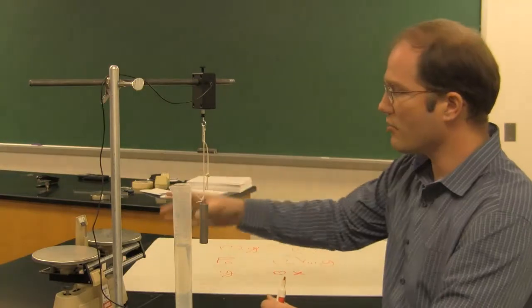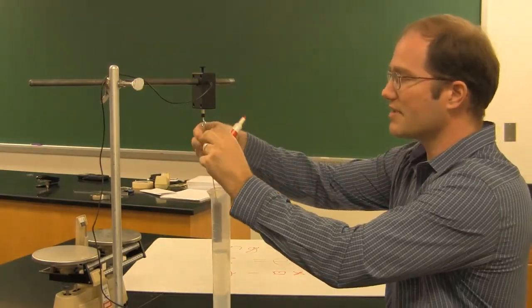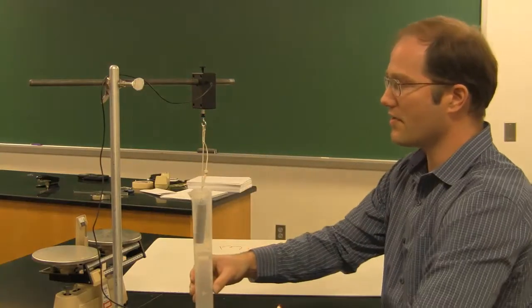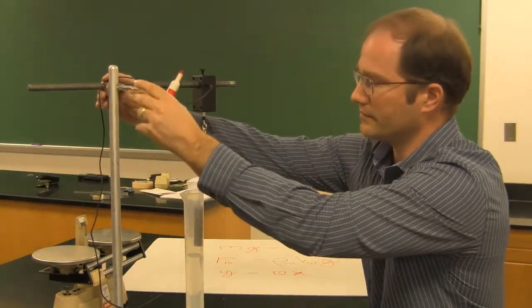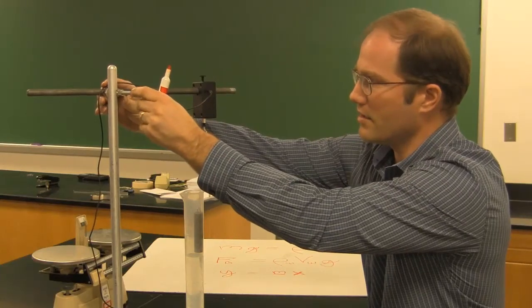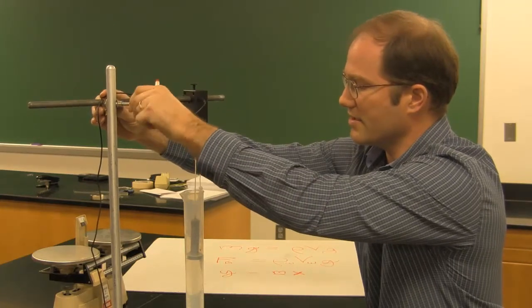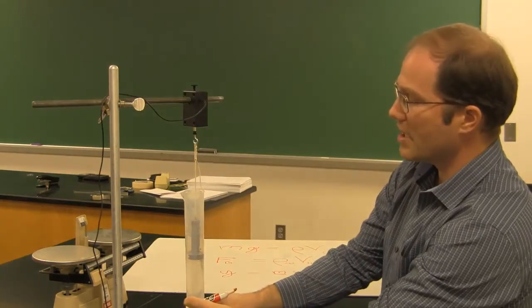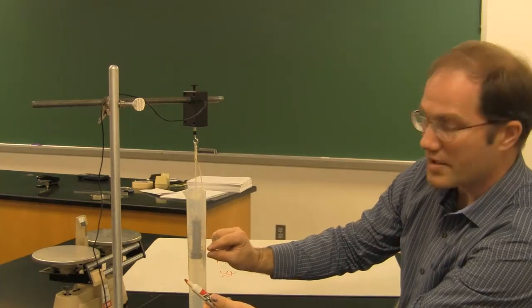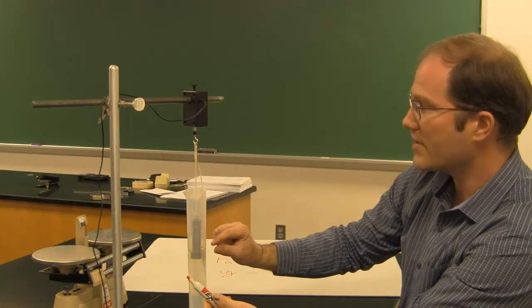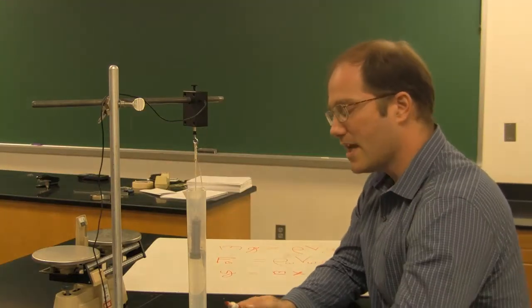So as we lower an object into this graduated cylinder, and I can do that by adjusting this screw, if I lower it into the water by increments, I should be able to measure those two quantities. I'm measuring the amount of water that's been displaced, and at the same time I can read the tension in the string. And it's important to note, the tension in the string is not the buoyant force.